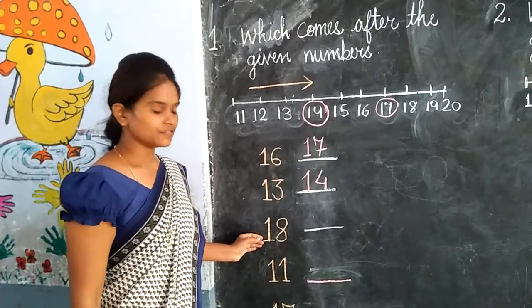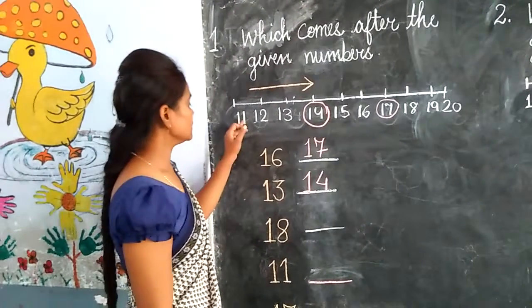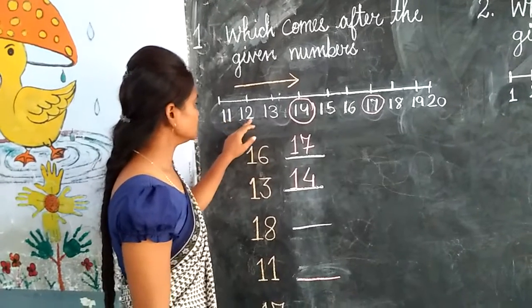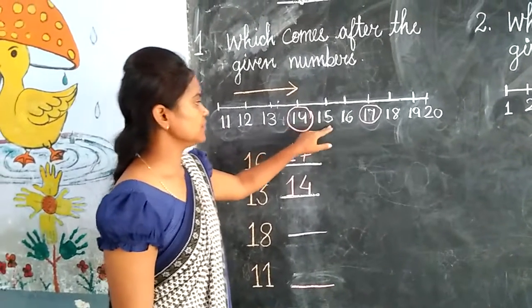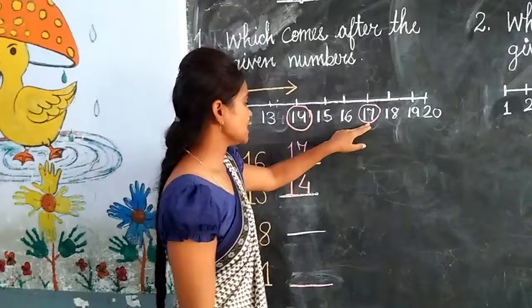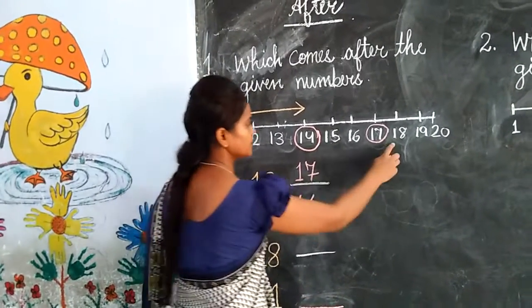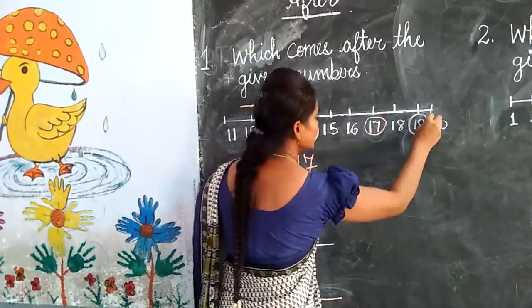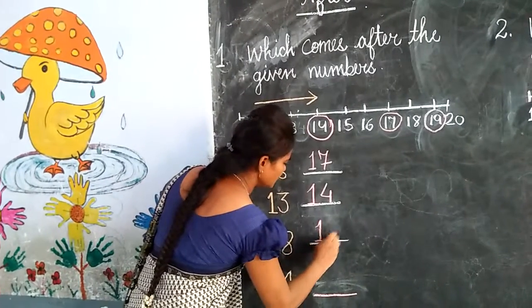16, 17, 18. What comes after 18? 13, 14, 15, 16, 17, 18 — what comes after 18? Yes — 19. We will write here: 19.